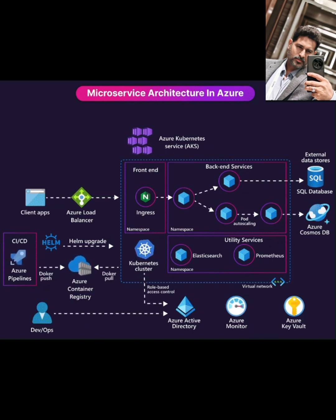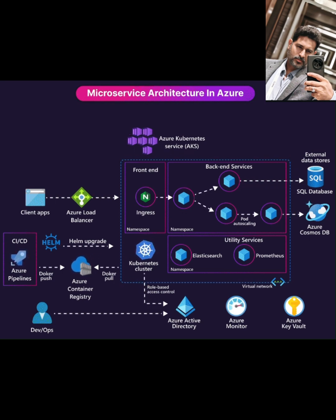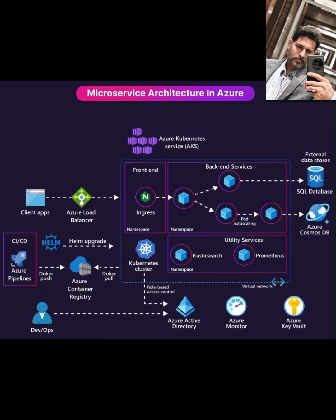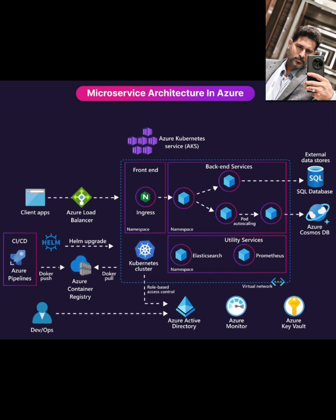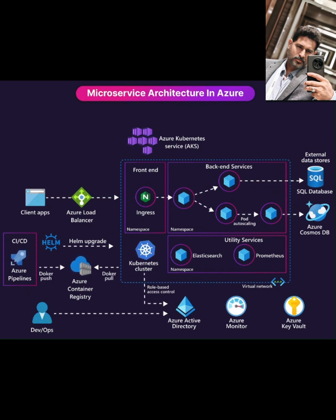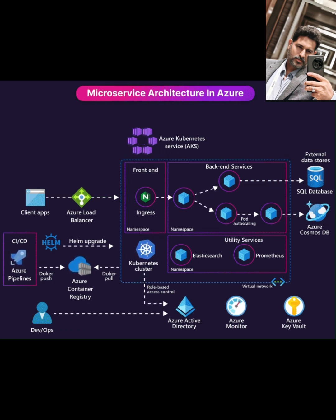Finally, when running on the cloud, thinking about costs is important. Remember to use the Azure Pricing Calculator to estimate costs and always refer to the Azure Well-Architected Framework for guidance on building cost-effective, reliable, secure, and performant solutions. Putting it all together, AKS provides a powerful, managed foundation for your microservice architecture on Azure. With components like load balancers, ingress, external data stores, robust CI/CD, security integration, and comprehensive monitoring, you have all the building blocks to deploy, scale, and manage your microservices effectively.